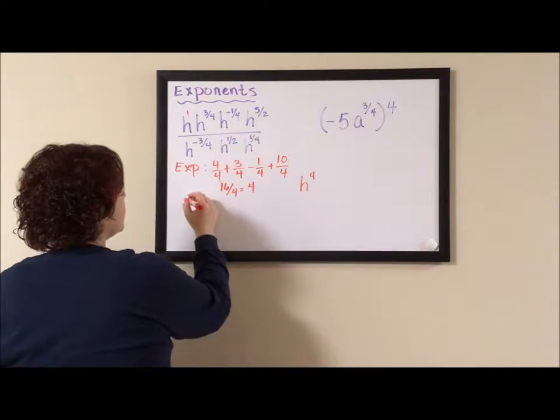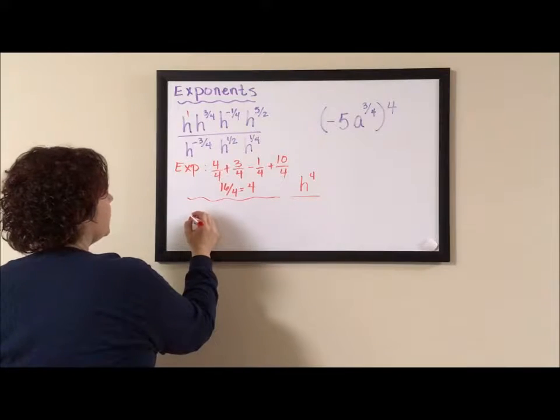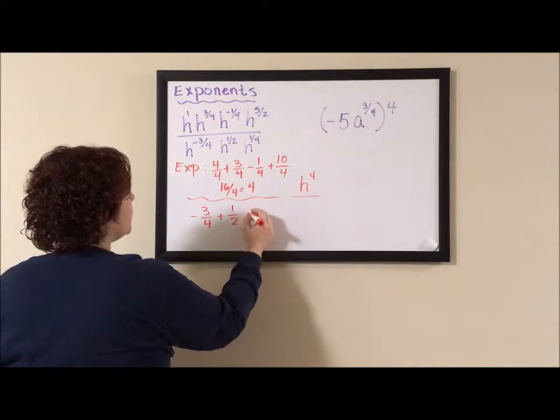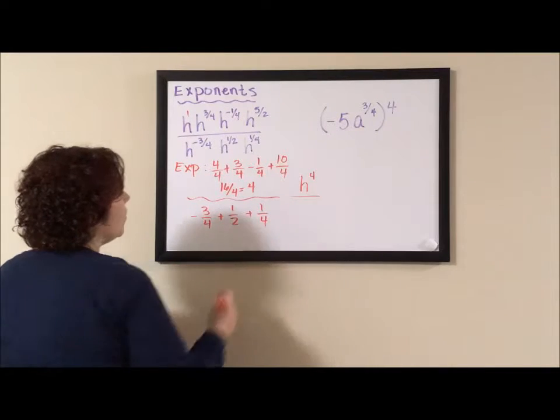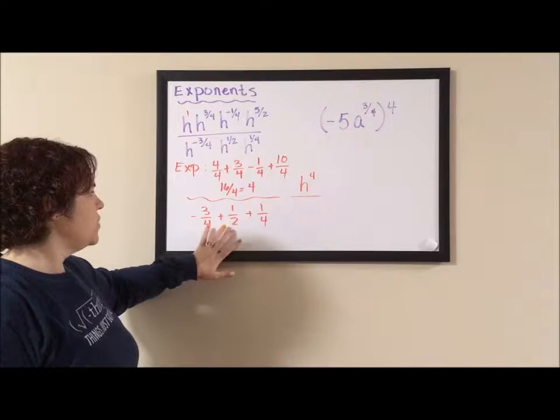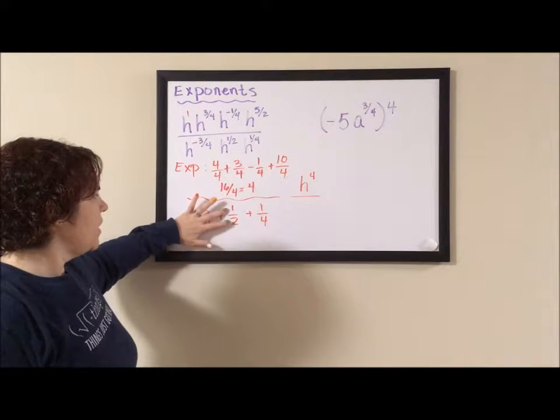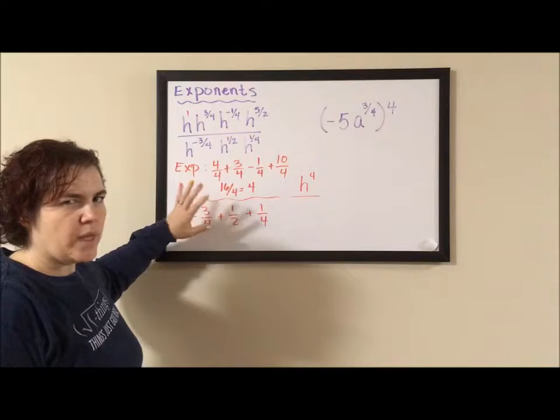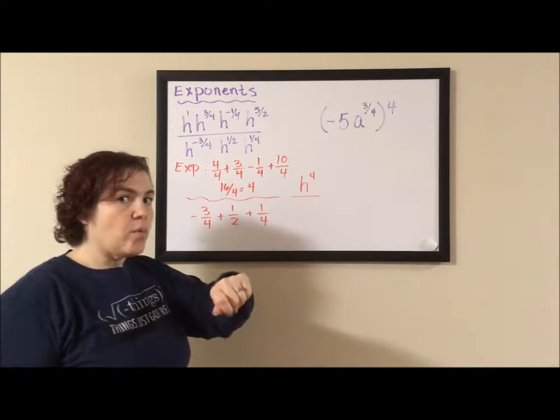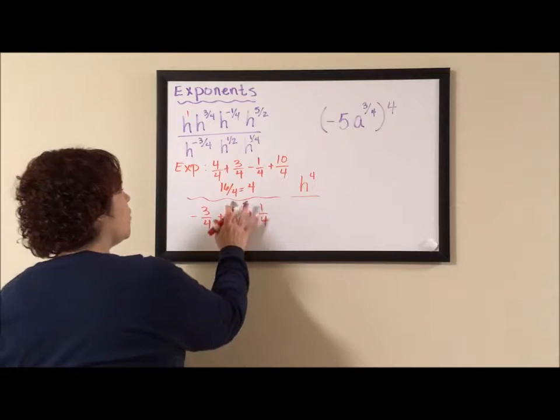Okay, next for my denominator, I have negative three fourths plus one half plus one fourth. Well, once again, to be able to add my fractions, I need common denominators. And to get this two to be a four, I need to multiply numerator and denominator by two. This is also like pizza math. You cut it in half, cut in half again, you have four pieces. So half your pizza is two fourths.